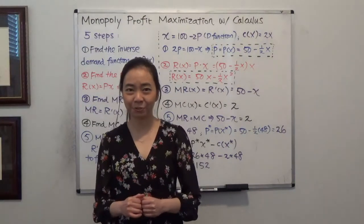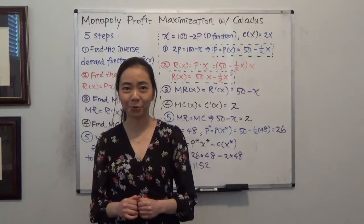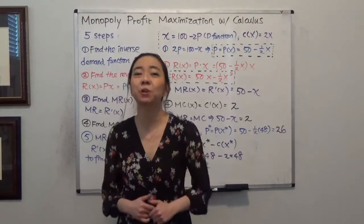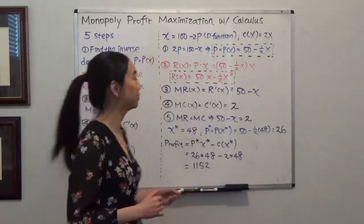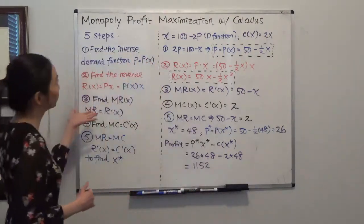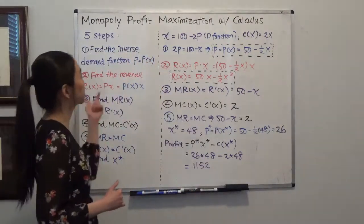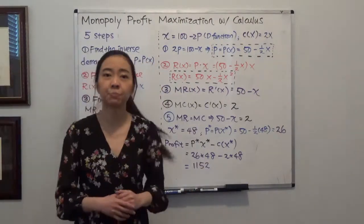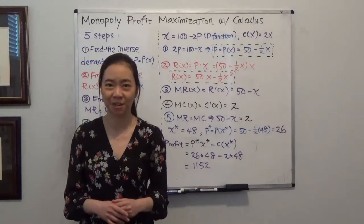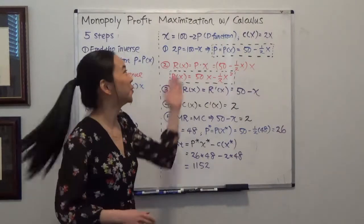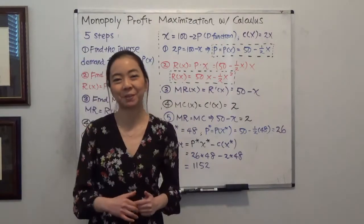Hello everyone, my name is Iris Frans, Bujiao Lin Wainru. Today we are going to learn how to use five steps to solve a monopoly profit maximization problem with calculus.